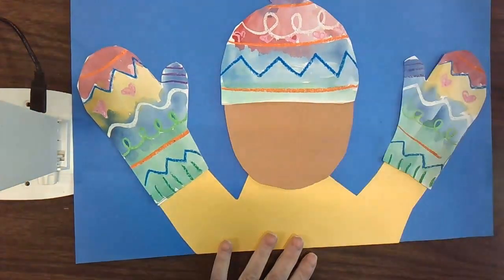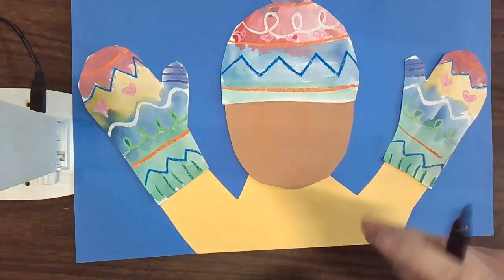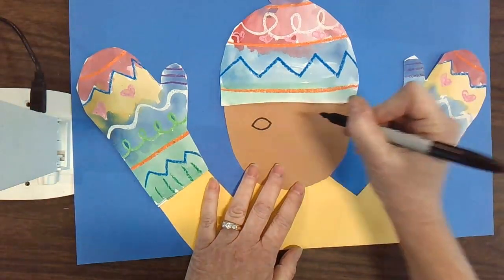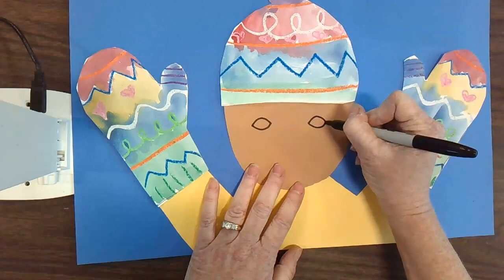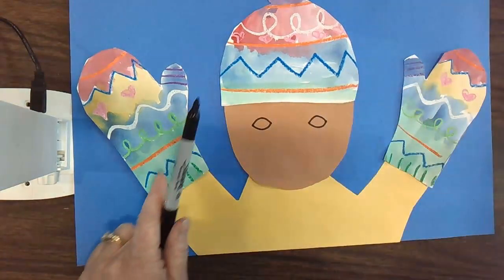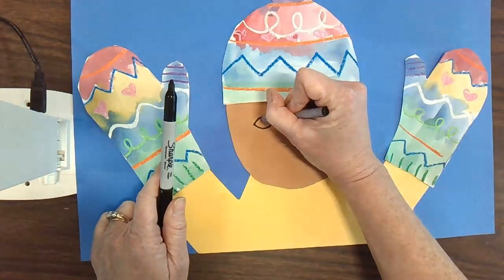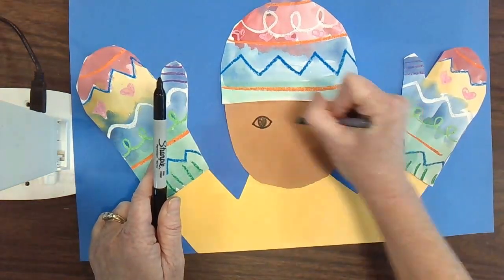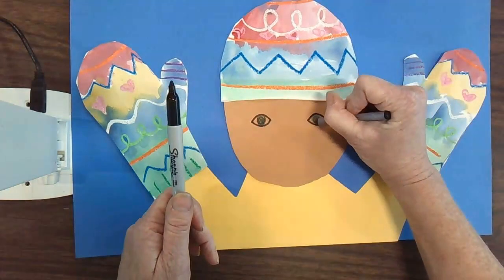Now I'm going to use either a sharpie or some crayons or both to make a face on my person. So think about what color eyes you have. I like to make football-shaped eyes and then a color big circle and a little black dot in the center, which is called the pupil.